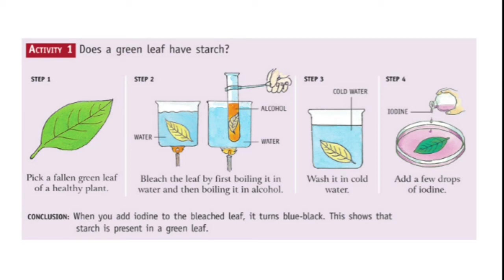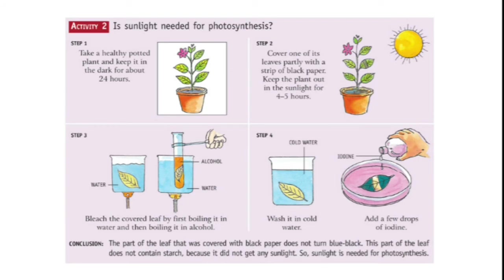For Activity 1, take a fallen leaf, then bleach it by first boiling it in water, then in alcohol. Wash it in cold water, place it in a petri dish, put some drops of iodine, and observe the color of the leaf. You will find it turns blue-black. This shows that starch is present in a green leaf.